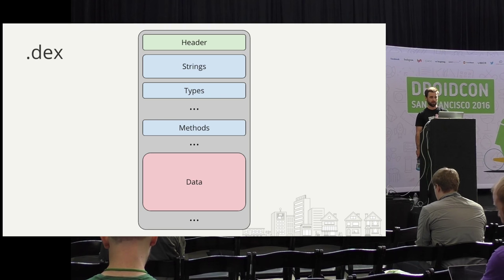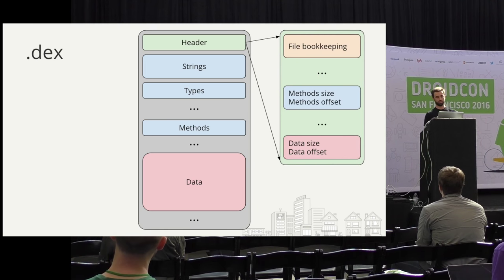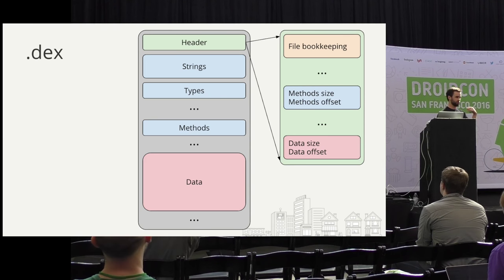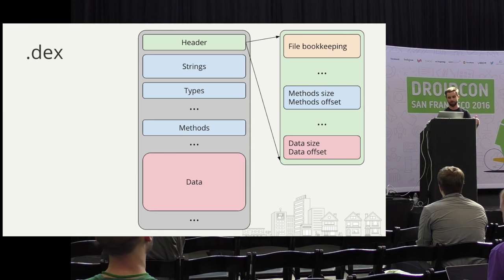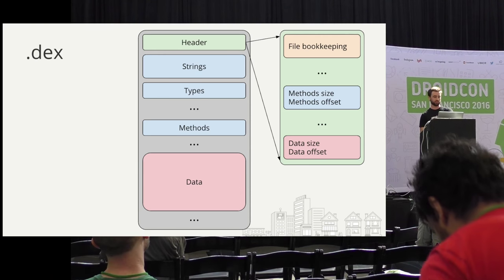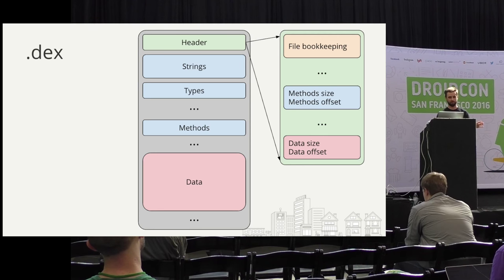What's in the header file? The header basically tells us where each part is — where the strings start and how long they are, where the methods start and how long they are, and likewise with the data container. So the gears should be turning: where's the limit? Where's the method limit that we keep talking about? Interestingly, the method limit is not in the identifier for method size — it's just a regular integer, not bounded to 65K. So where is this limit?